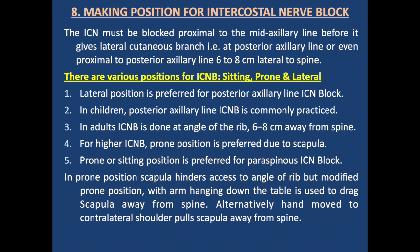The intercostal nerve must be blocked proximal to the mid-axillary line, before it gives the lateral cutaneous branch — ideally at the posterior axillary line or 6 cm lateral to the spine. Positions include sitting, prone, and lateral depending on the requirement. Lateral position is preferred for posterior axillary line blocks. In children, the posterior axillary line is commonly used. In adults, the block is done at the angle of the rib, 6–8 cm from the spine. For higher intercostal levels, prone position is preferred because the shoulder obstructs posterior axillary access. In prone position, a modified approach with the arm hanging down drags the scapula away from the spine.